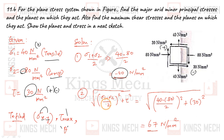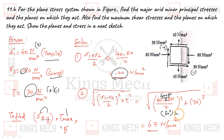Next, (sigma 1 minus sigma 2) divided by 2 squared: this is 40 minus of minus 80, which is 40 plus 80 = 120, divided by 2 = 60. So we get 60 squared plus 30 squared. 60 squared is 3600, and 30 squared is 900.